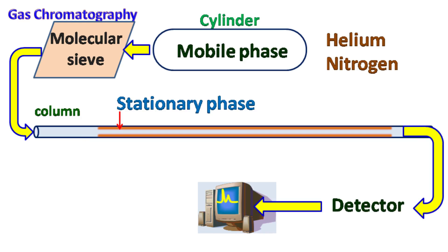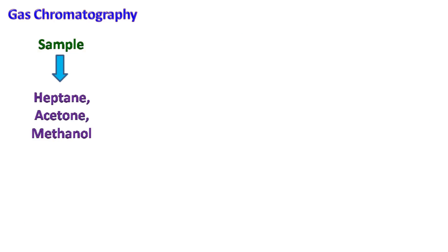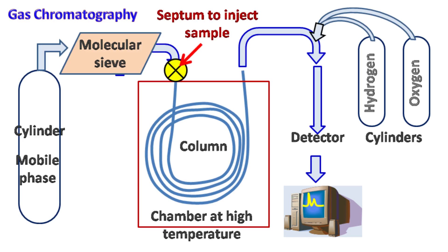Let's see the working of gas chromatography. The sample which is to be separated is mixed with an appropriate volatile solvent such as heptane, acetone, or methanol. Just before the column there is a septum that allows injection of the sample.